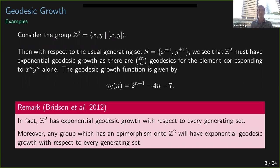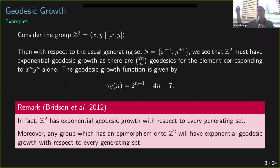Let's give a simple example of geodesic growth. For the group Z², with respect to the usual generating set, it automatically has exponential geodesic growth. If we consider an element going on the diagonal of the integer lattice — say x^n y^n — there are already exponentially many ways to represent that element, since we can commute the letters x and y however we want. There are 2n-choose-n ways to arrange those letters, so there are already exponentially many choices.